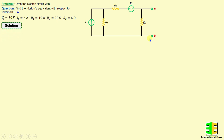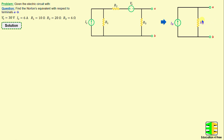By applying Norton's theorem between terminals A and B, we can replace this circuit with a current source in parallel with a resistor, which will be denoted as IN and RN.